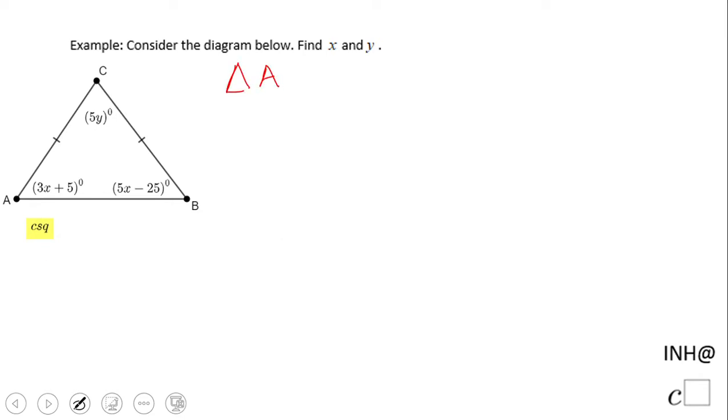Triangle ABC - what kind of triangle is this? If you notice, we have a check mark on two of the sides. That means this is an isosceles triangle.